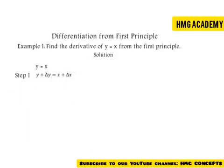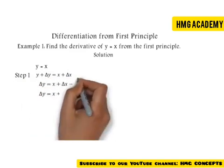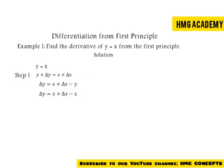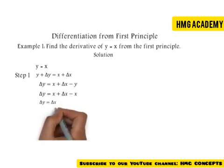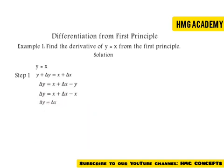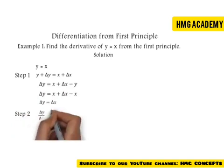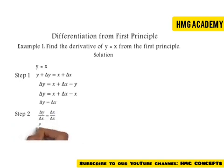Step one: we increase both y and x to have y plus delta y equals x plus delta x. We make delta y the subject of the formula, and when we simplify we have delta y equals delta x. The next step, we divide through by delta x, so delta y over delta x equals delta x over delta x, and delta x over delta x equals one.